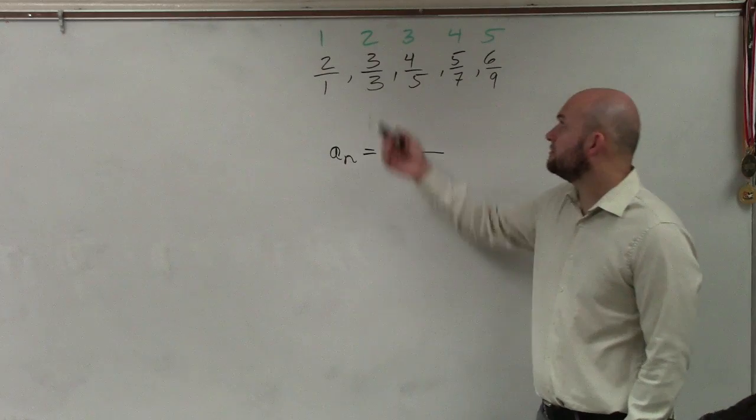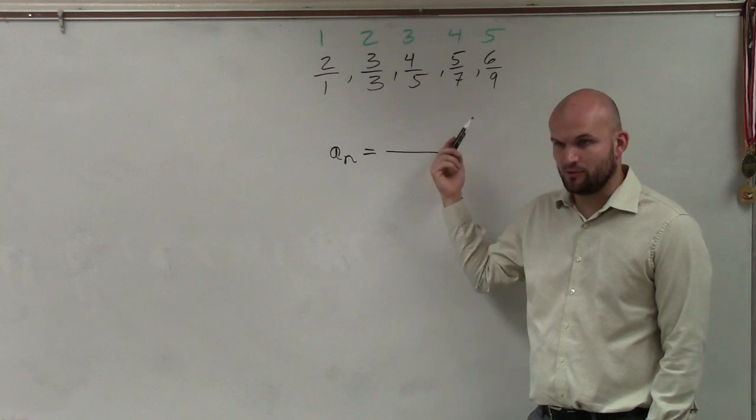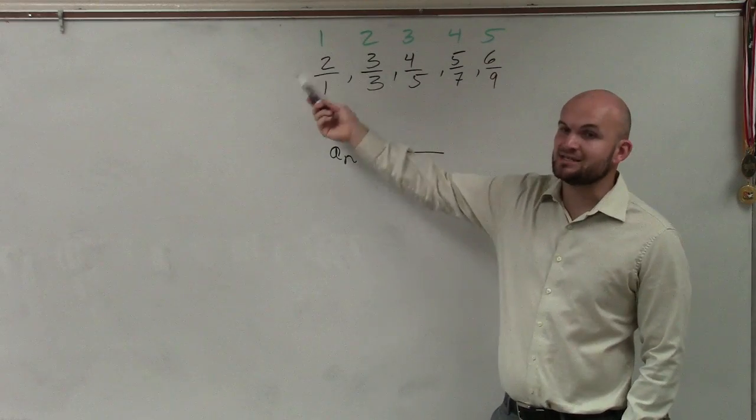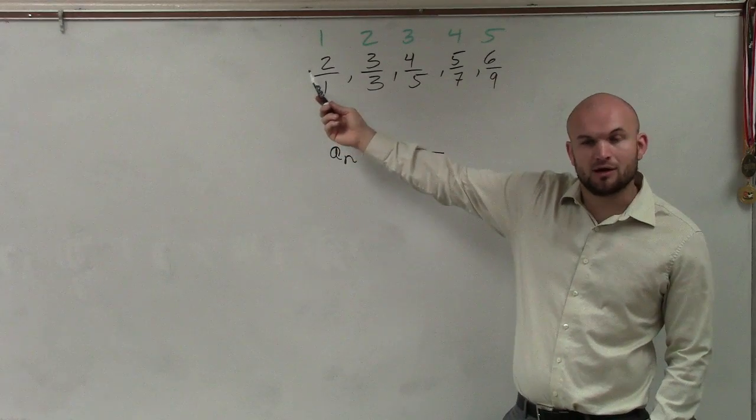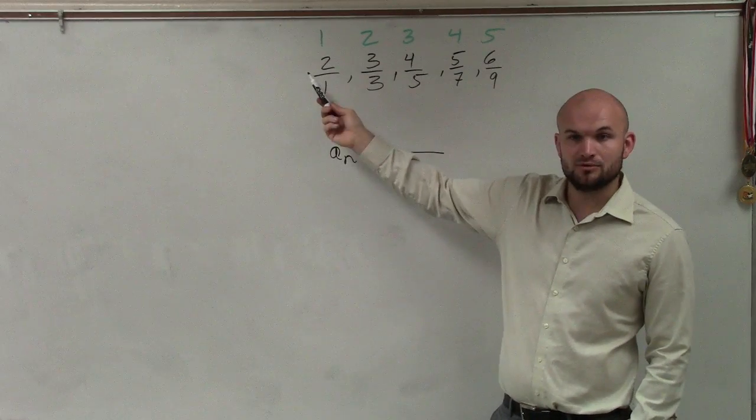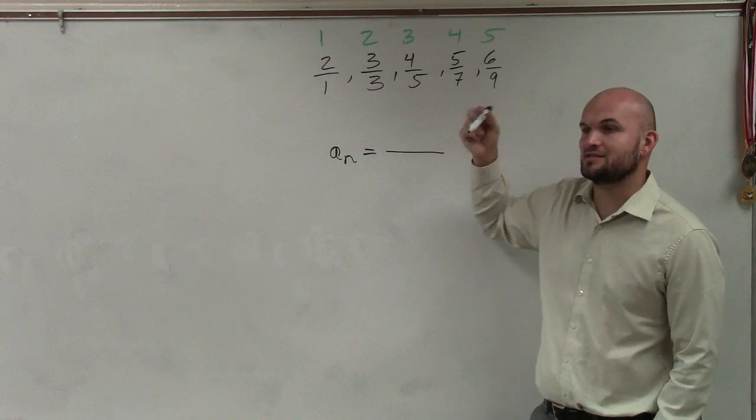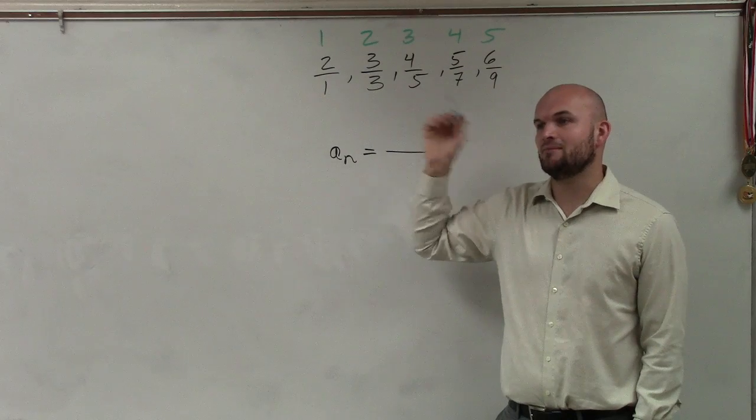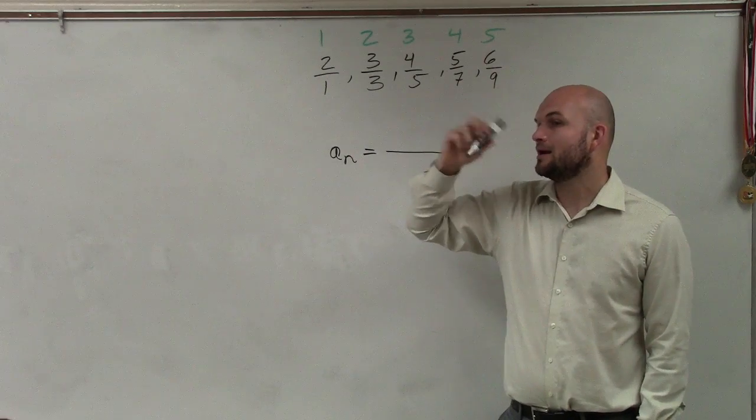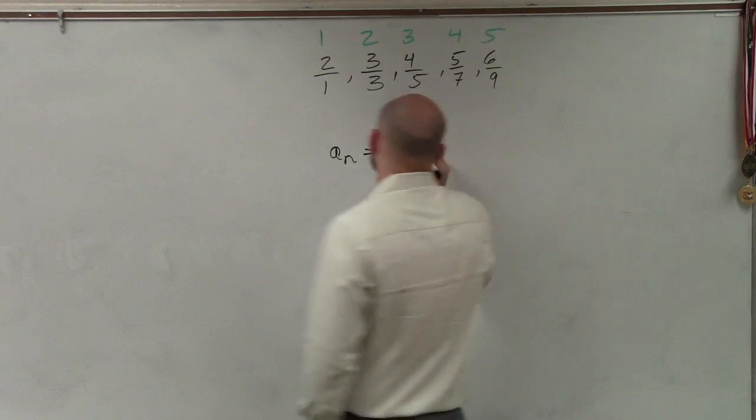So remember, the n represents the number in the sequence. When I put the number in the sequence, how do I get to my value in the sequence? To go from one to two, two to three, three to four, four to five, five to six, Aaron, what do you think my rule may be? n plus one. Wow, that's true.